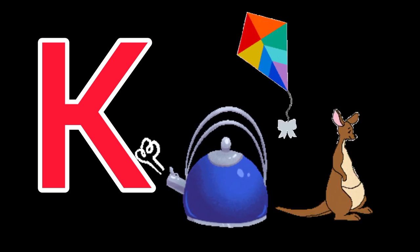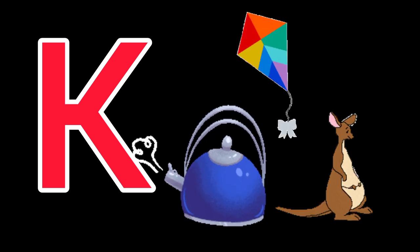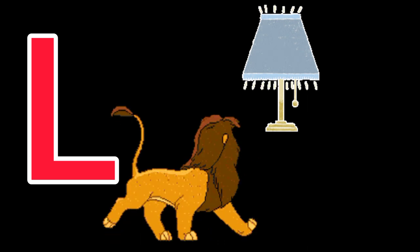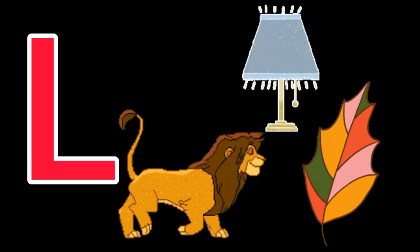Letter K: K for Kite, K for Kettle, K for Kangaroo. Letter L: L for Lamp, L for Lion, L for Leaf.